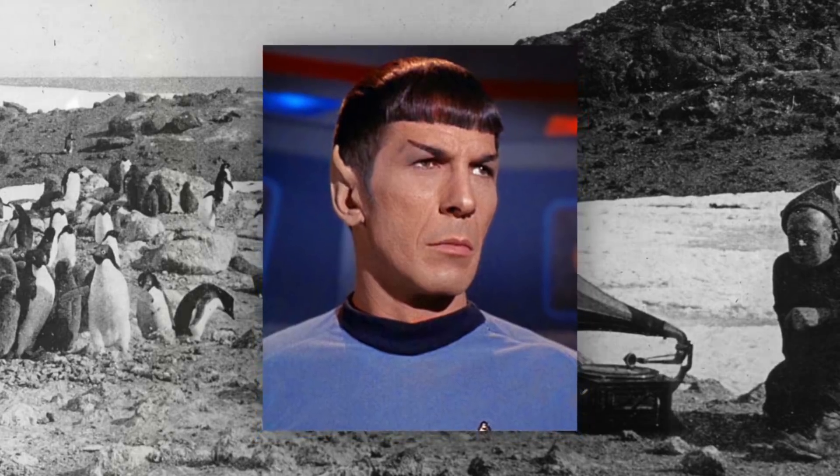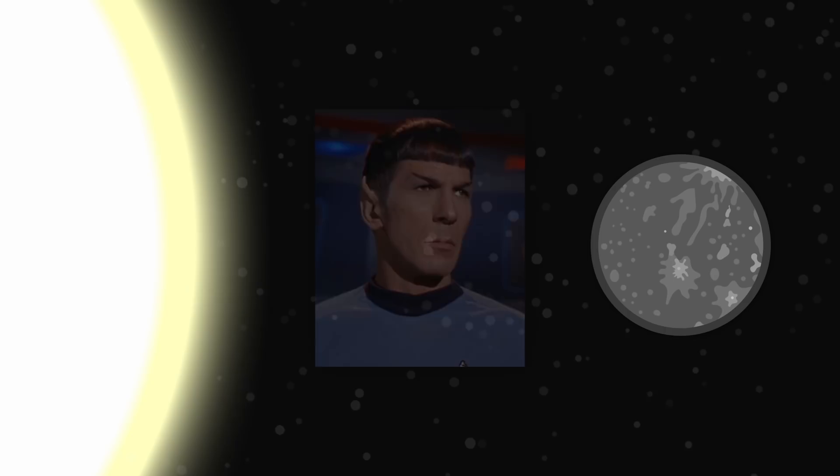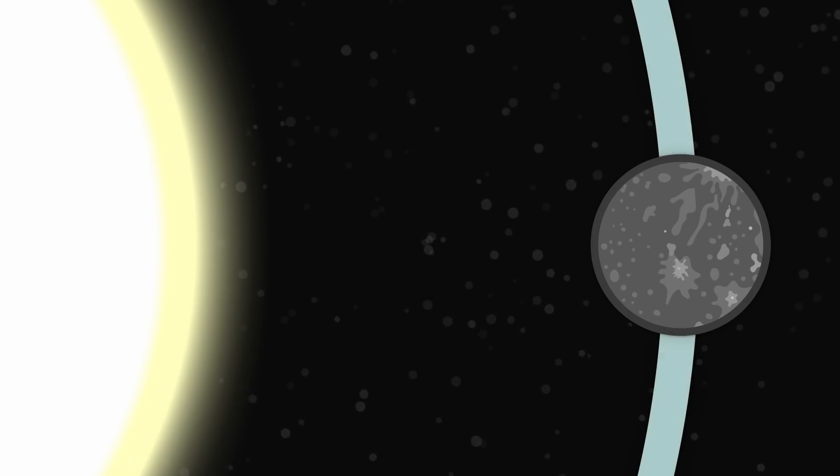But another predicted planet named Vulcan, which was hypothesized to exist between the sun and Mercury because of strange effects on Mercury's orbit, was later disproven. And the strange effects on Mercury's orbit was later explained by Einstein's theory of general relativity.